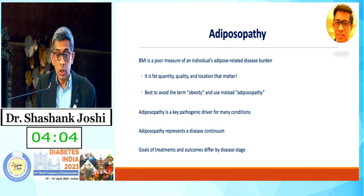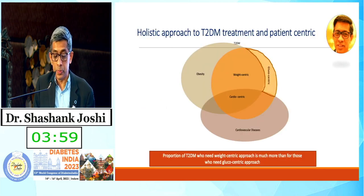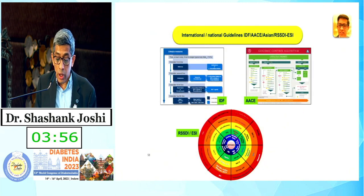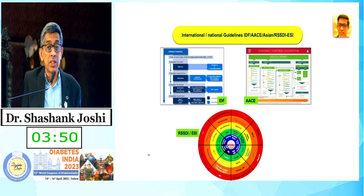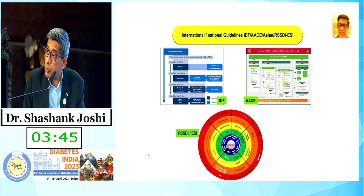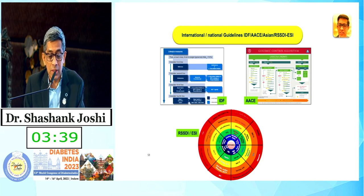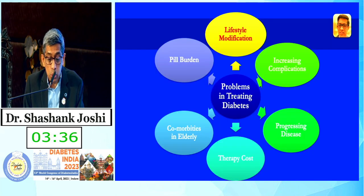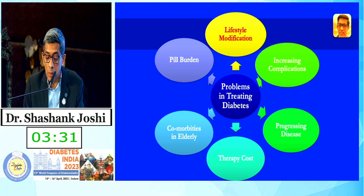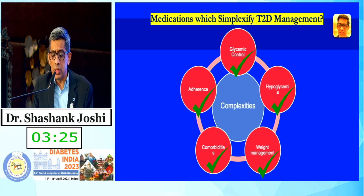We have the IDF algorithm, the ACE algorithm, and the RSSDI wheel. The RSSDI wheel is crucial. What are we trying to do? Reduce pill burden, lifestyle modifications, reduce complications, progression, cost, and comorbidity. Simplifying management of diabetes: glucose, hypoglycemia, weight management, comorbidity care, and adherence. In India we see a huge spectrum — malnourished people, lean people, thin-built with central obesity, normal weight, overweight, obese, and morbidly obese — seven spectrums.